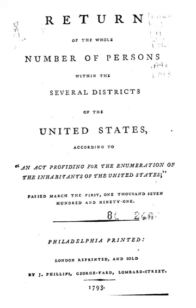These include some 1790 data from Connecticut, Maine, Maryland, Massachusetts, New Hampshire, New York, North Carolina, Pennsylvania, Rhode Island, South Carolina, and Vermont. However, the validity and existence of most of these data can be confirmed in many secondary sources pertaining to the first census.